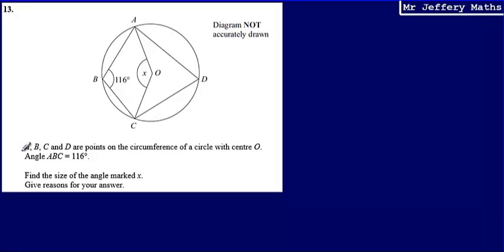So this first piece of information is really important. A, B, C and D are points on the circumference. That means that A, B, C and D form a cyclic quadrilateral and that's going to help me with this answer.